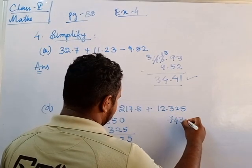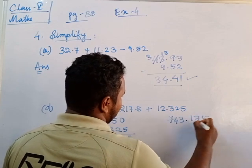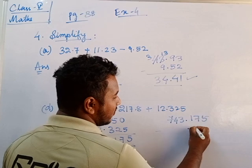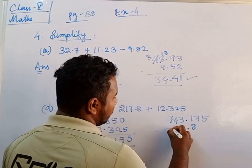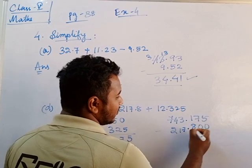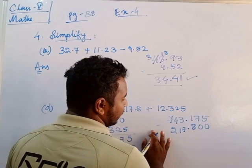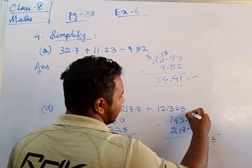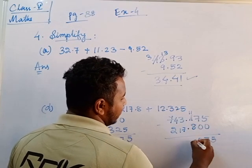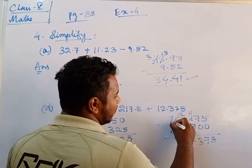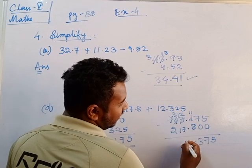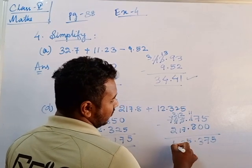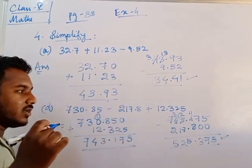Now do the subtraction: 743.085 minus 217.8. Write the point first, then 217.800 below. If nothing is there, put zeros. Subtract: 5 minus 0 is 5; borrow and carry through; 7 minus 2 is 5, 3 minus 1 is 2. The final answer is 525.285.